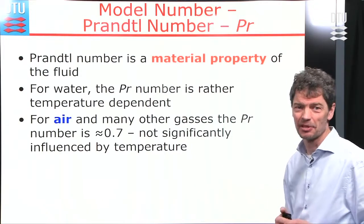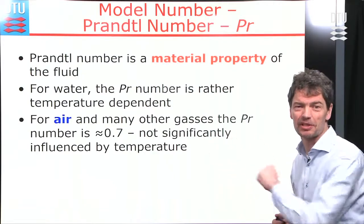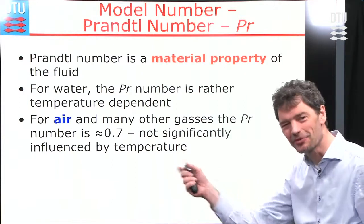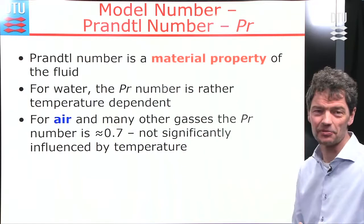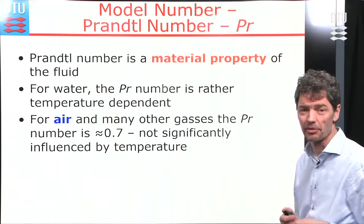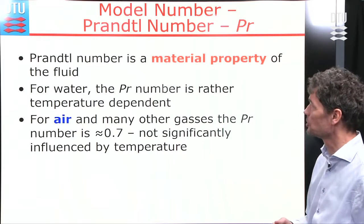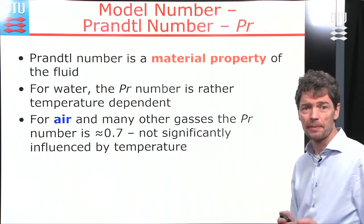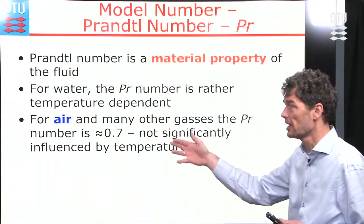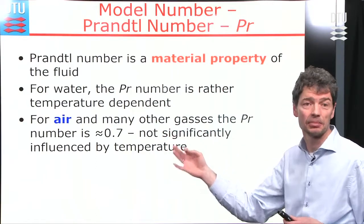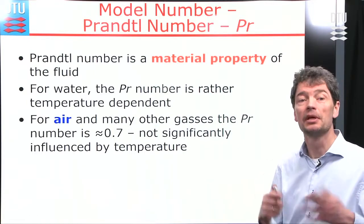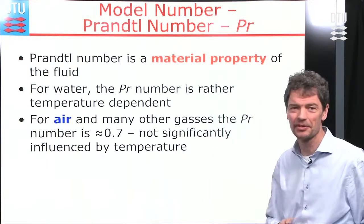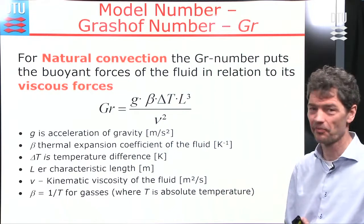We also need the Prandtl number, which was the last column in our table of material properties for the fluid. For water, the Prandtl number is rather temperature-dependent and must be considered carefully. For most gases, including air, the Prandtl number is close to 0.7 and almost not temperature-dependent.